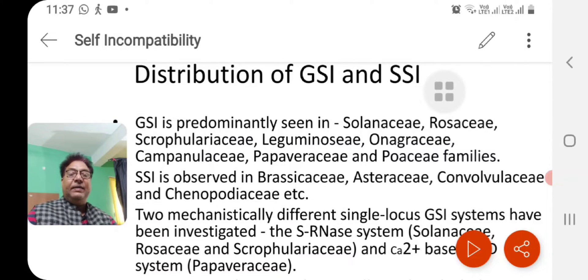Whereas SSI, sporophytic self incompatibility, is observed in Brassicaceae, Asteraceae, Convolvulaceae and Chenopodiaceae.